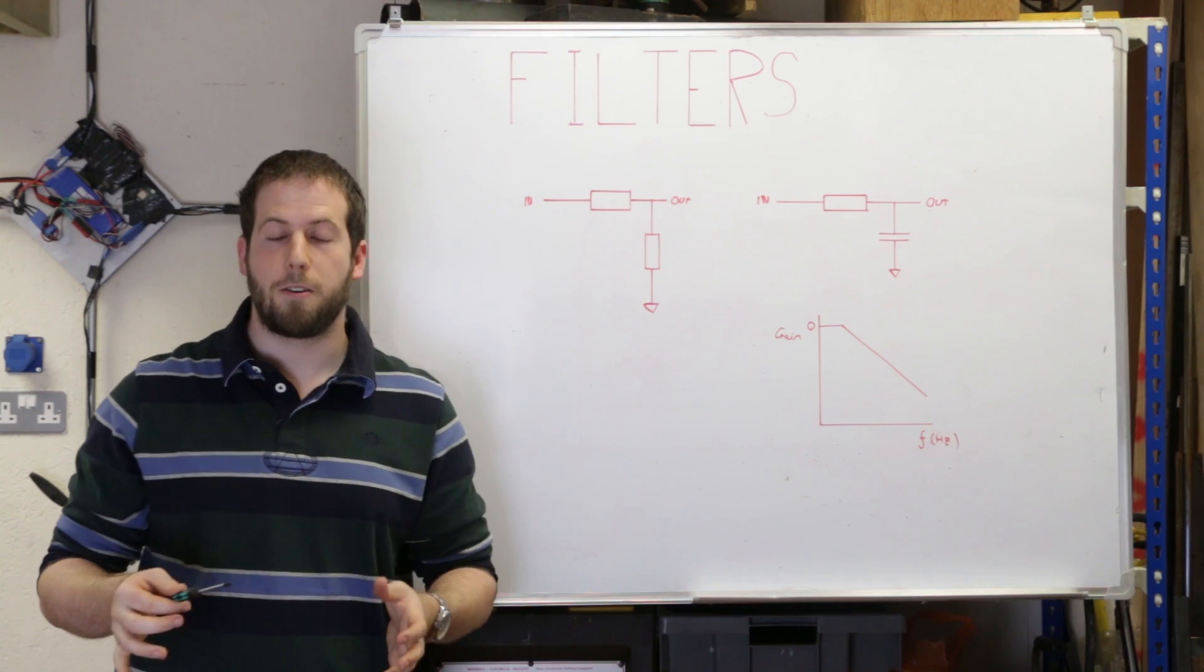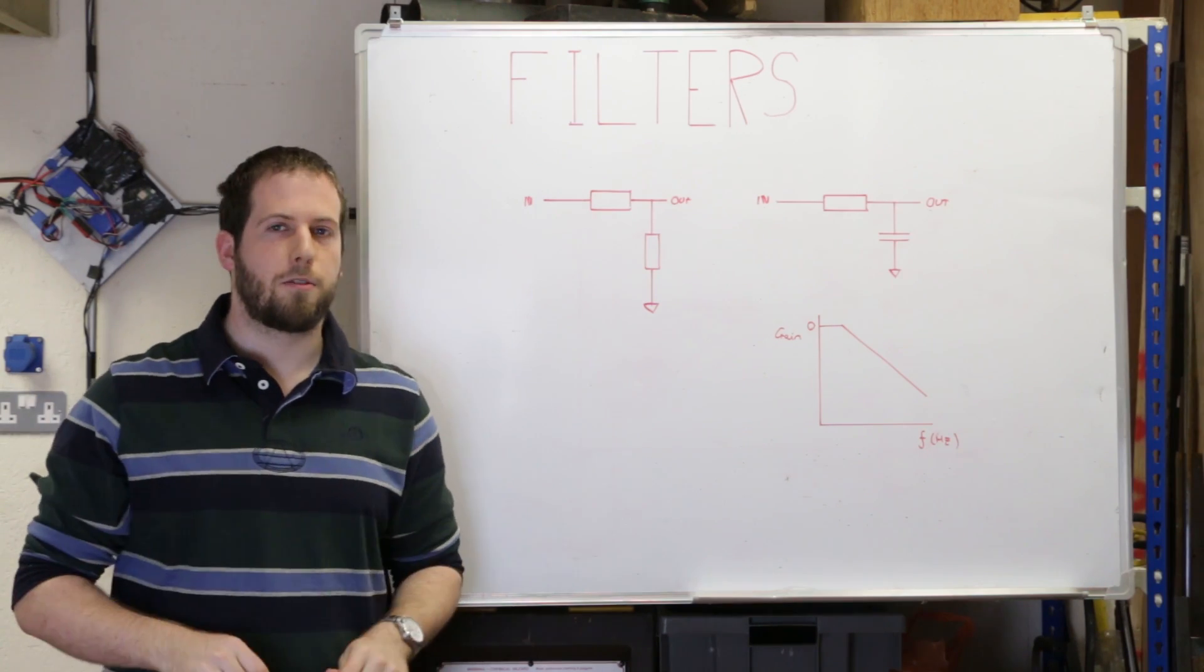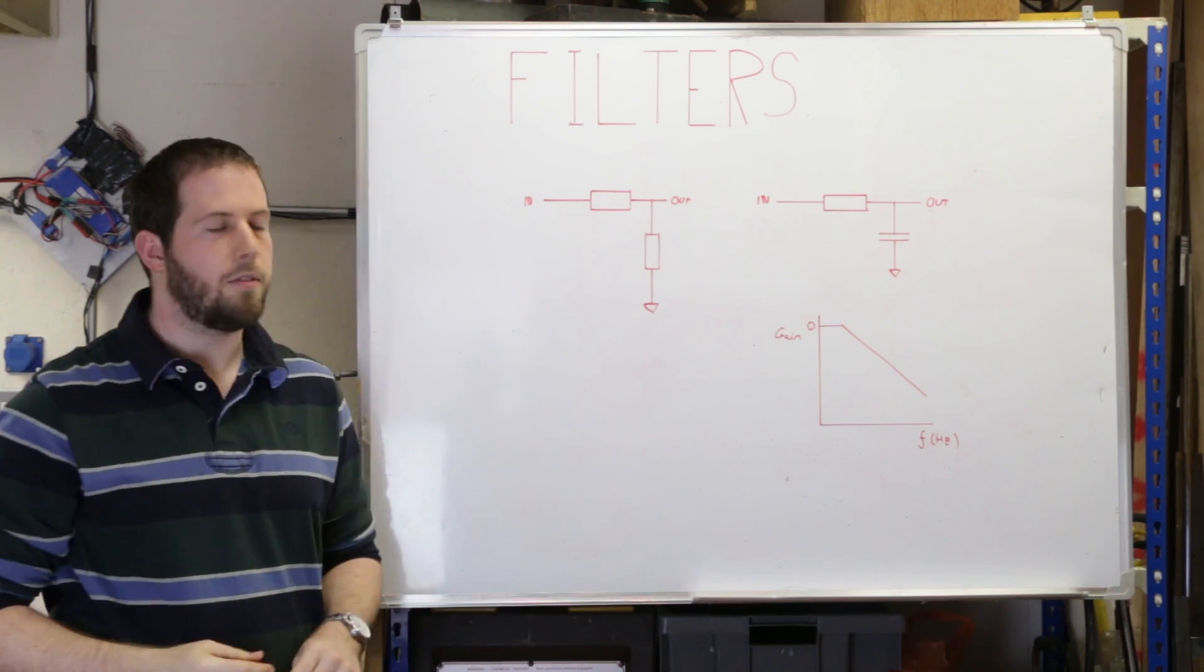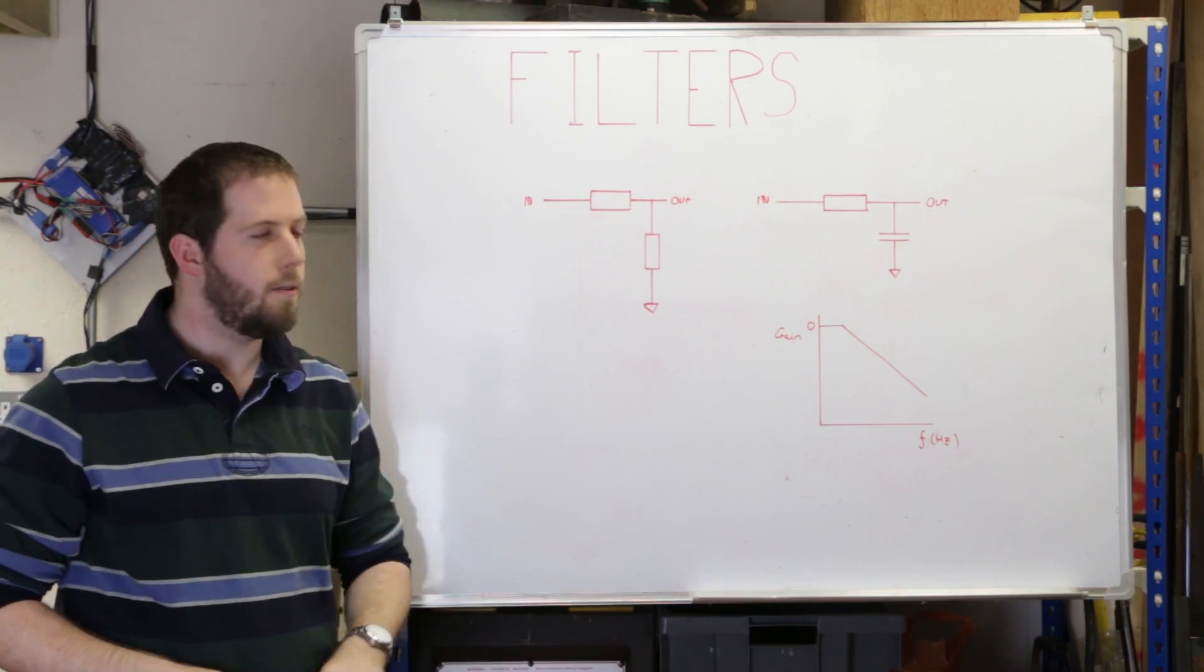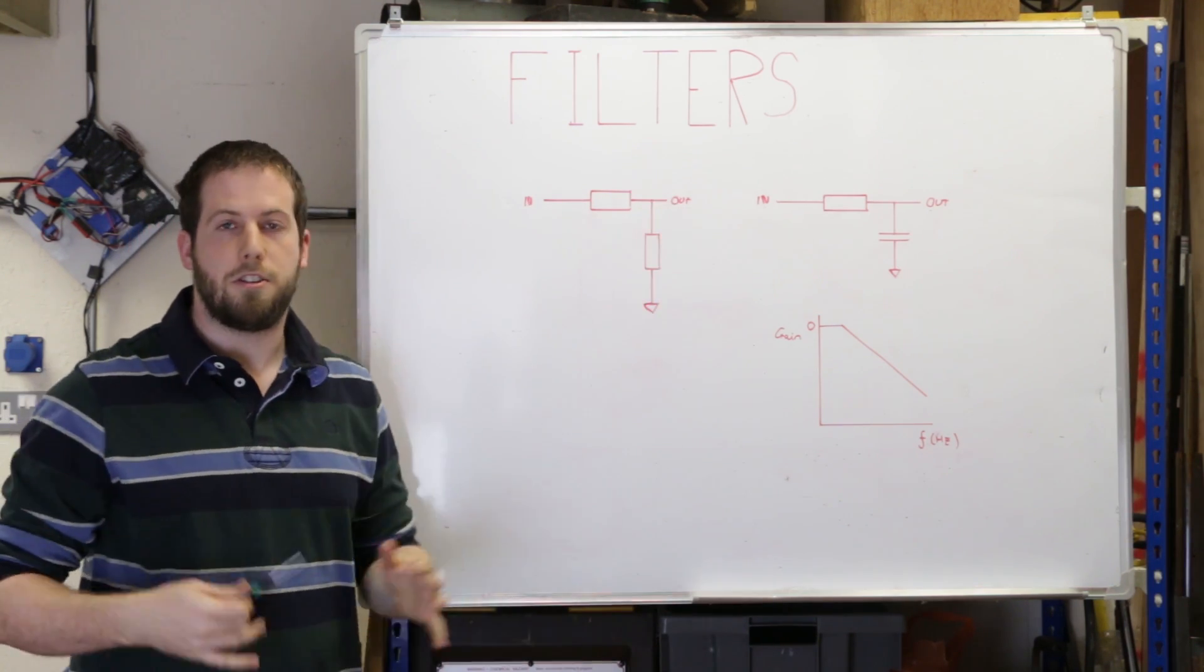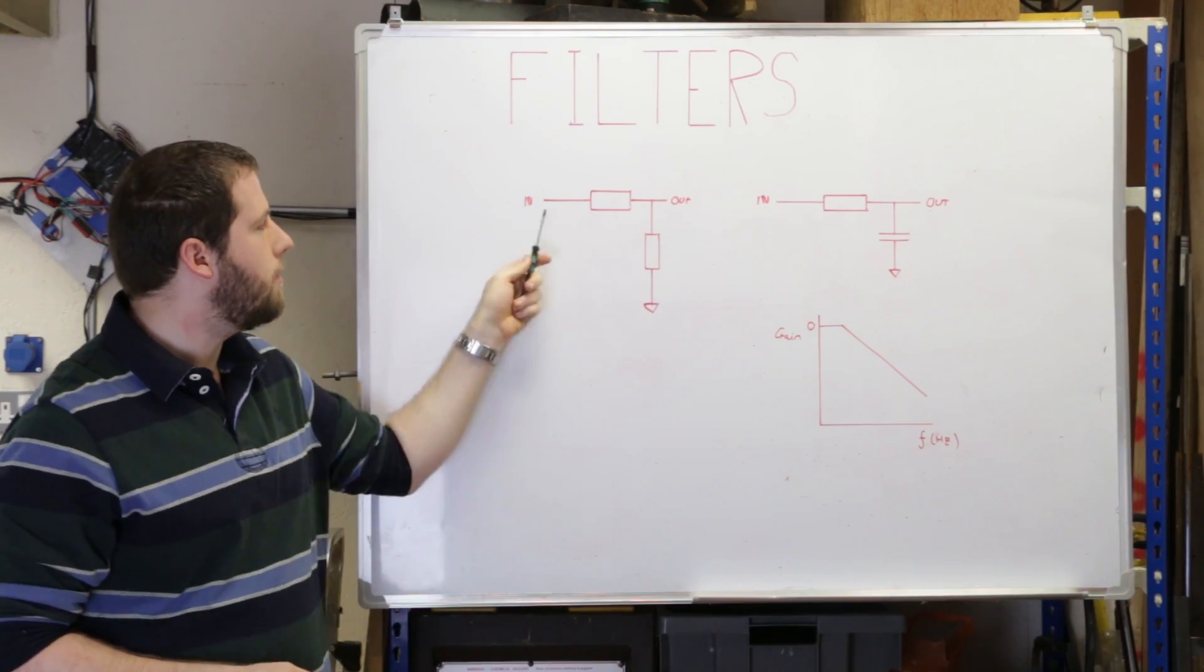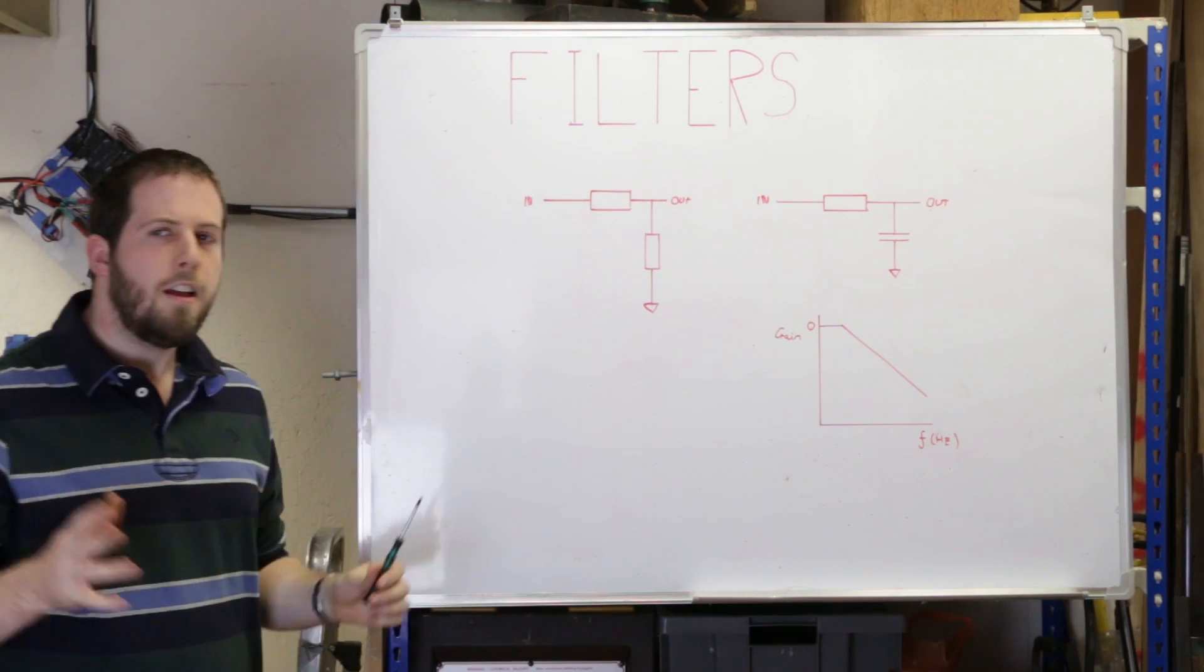We've talked about some of the theoretical filters. Let's have a quick look at some basic but real filter circuits. Almost all filter circuits start off with something like a potential divider. You've got an input voltage, an output voltage. If you make the two resistor values the same, the output voltage is half the input voltage. As the bottom resistor value decreases, the output voltage decreases. As it increases, the output voltage increases. Eventually if you keep increasing this to infinity, the output voltage equals the input voltage. If you decrease it to zero, the output voltage is zero.